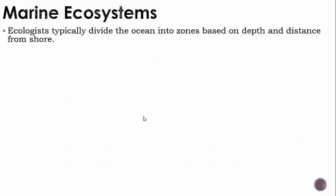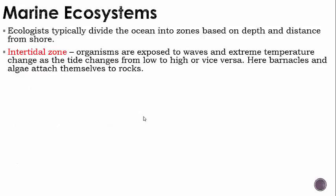Marine ecosystems: ecologists typically divide the ocean into zones based on depth and distance from shore. We have the intertidal zone — the key word being tidal, meaning tide. Organisms are exposed to waves and extreme temperature change as the tide changes from low to high tide, or high to low. Barnacles and algae attach themselves to rocks. When the tide comes in, they're covered by water. When the tide goes out, they're exposed to the sun — that's where the extreme temperature changes come from.